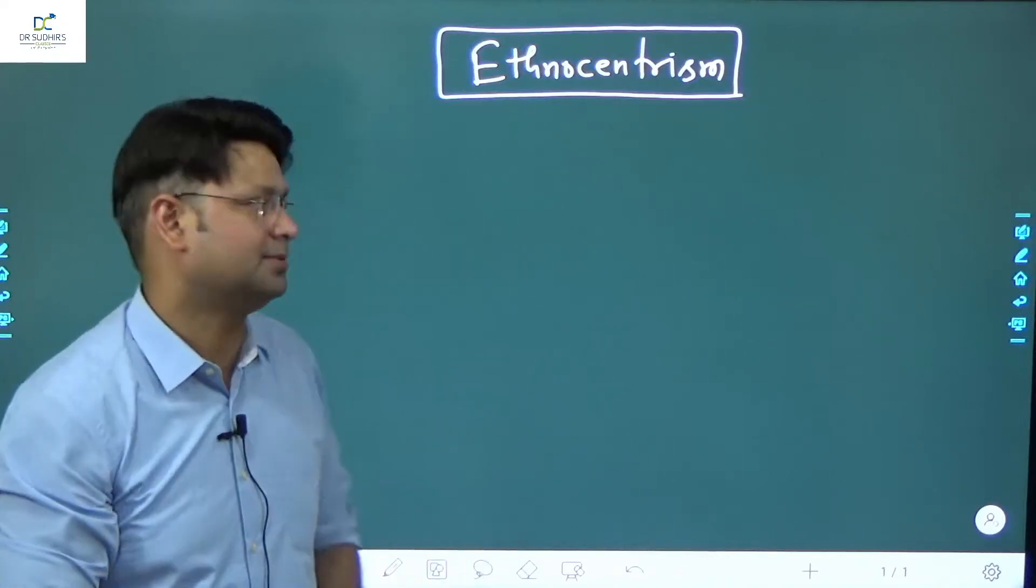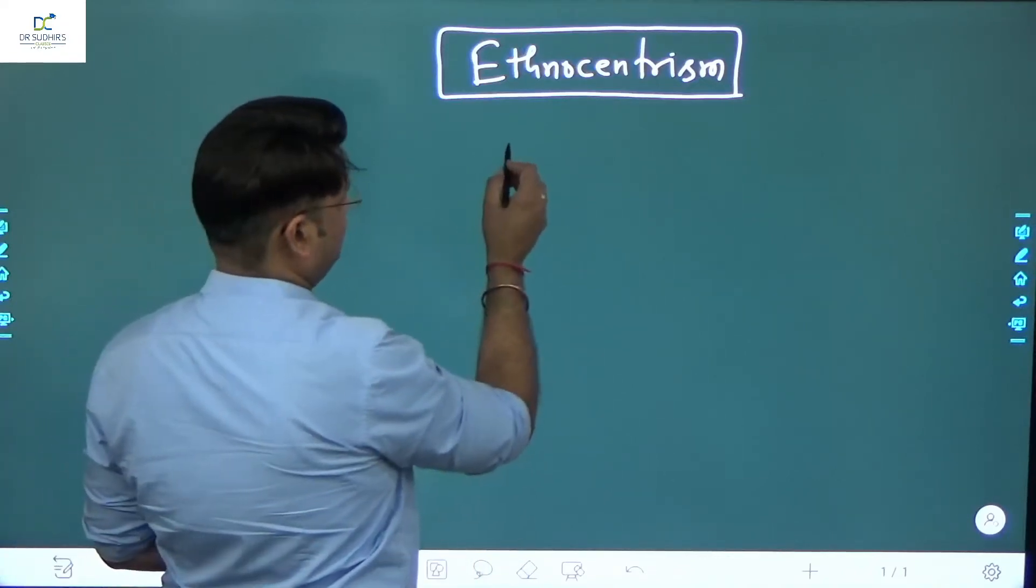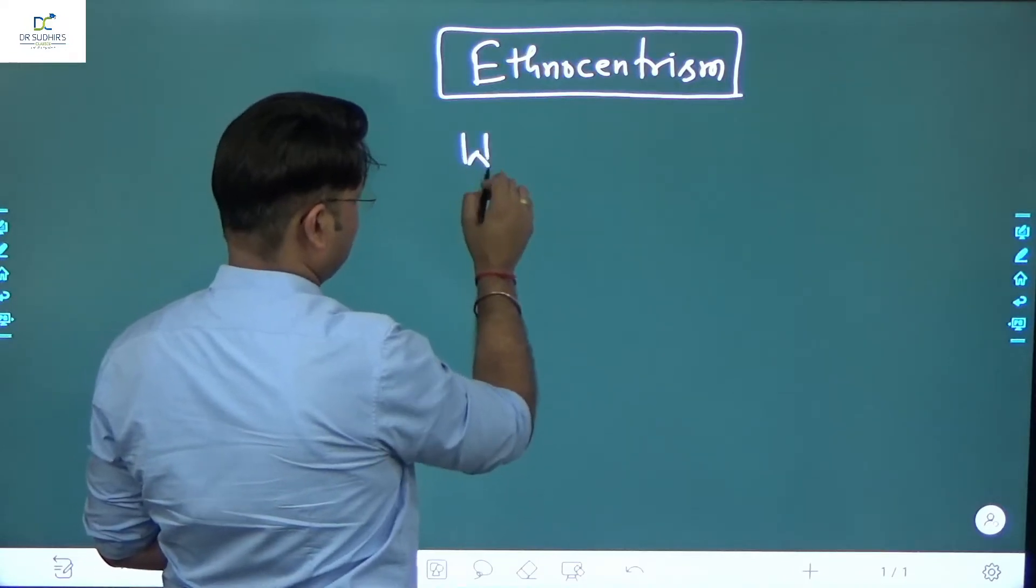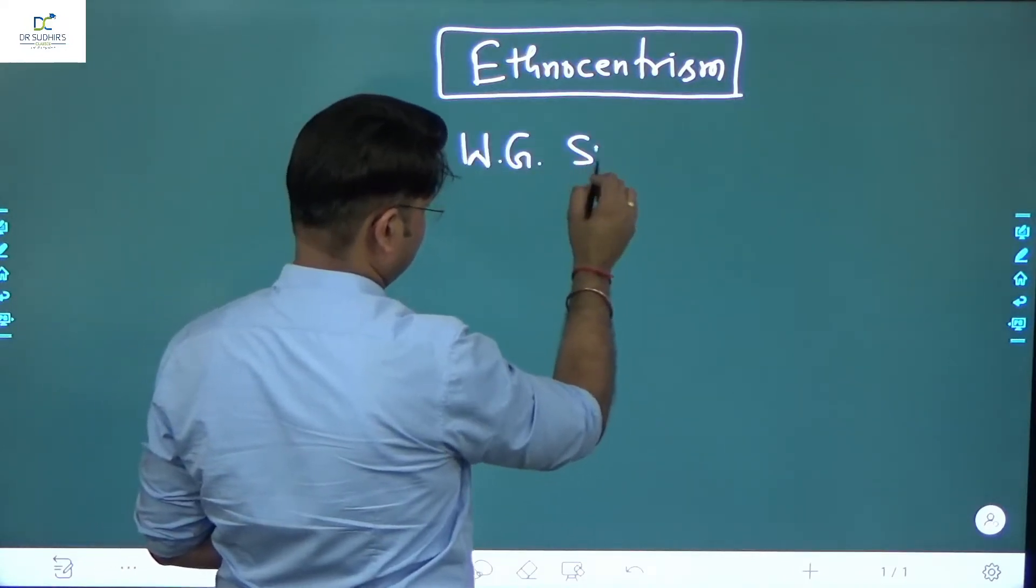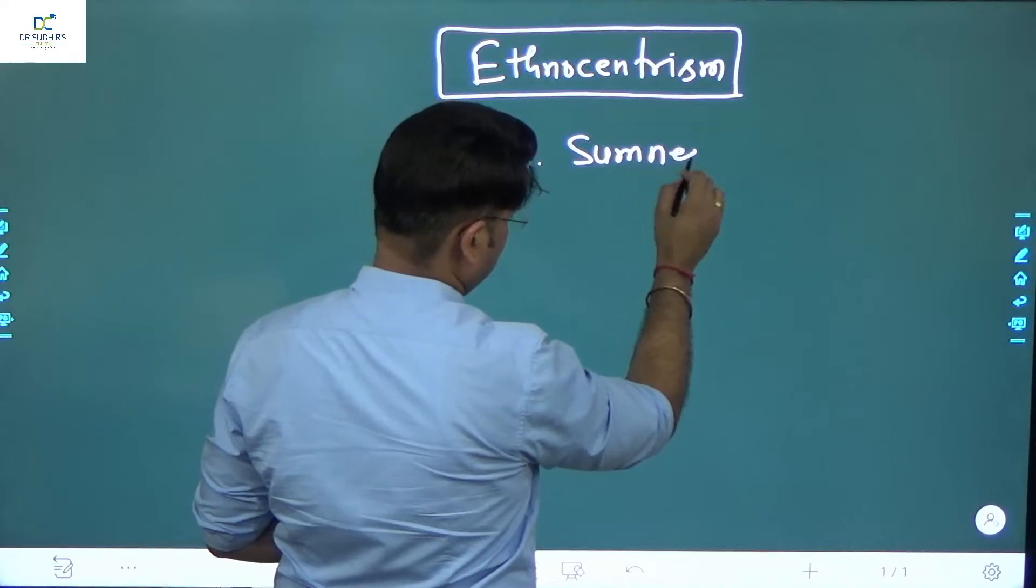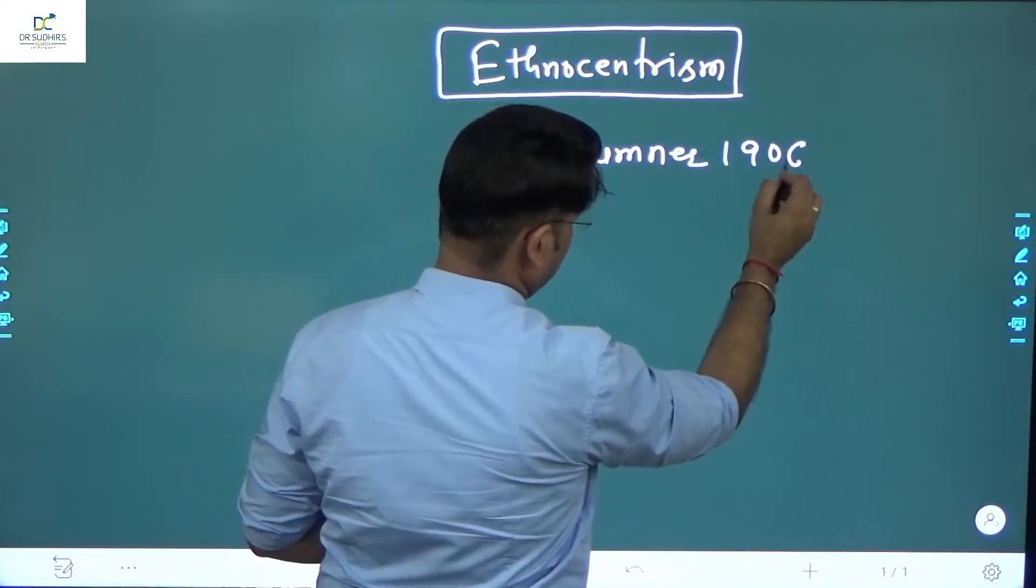The term ethnocentrism was coined by W.G. Sumner in 1906 in his work Folkways.